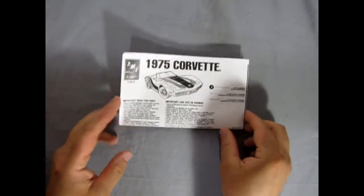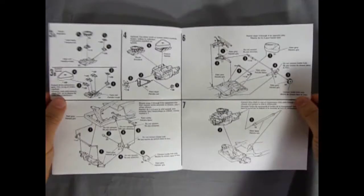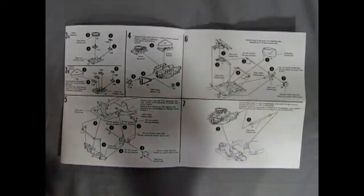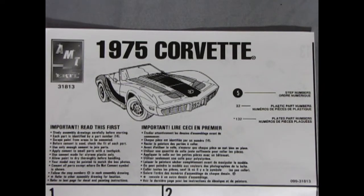Our model kit instructions are the fold-out map style which comes out pretty long on your hobby bench. And to begin our instruction sheet we have this nice illustration of the 1975 Corvette decked out with a whole bunch of 70s style graphics.